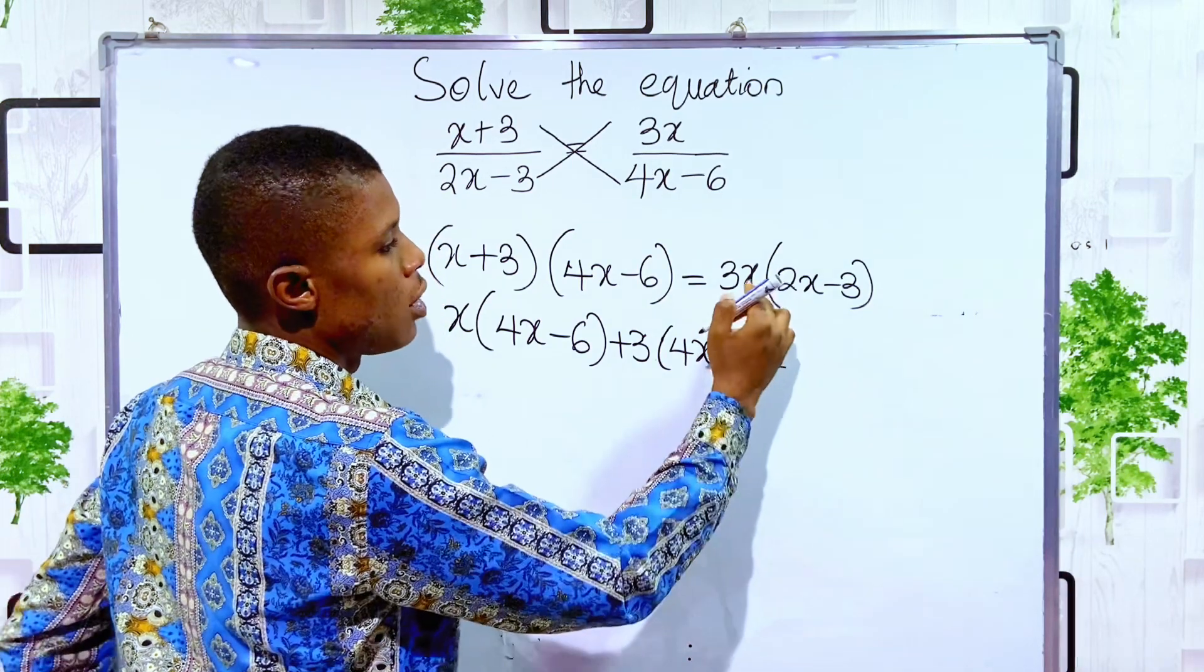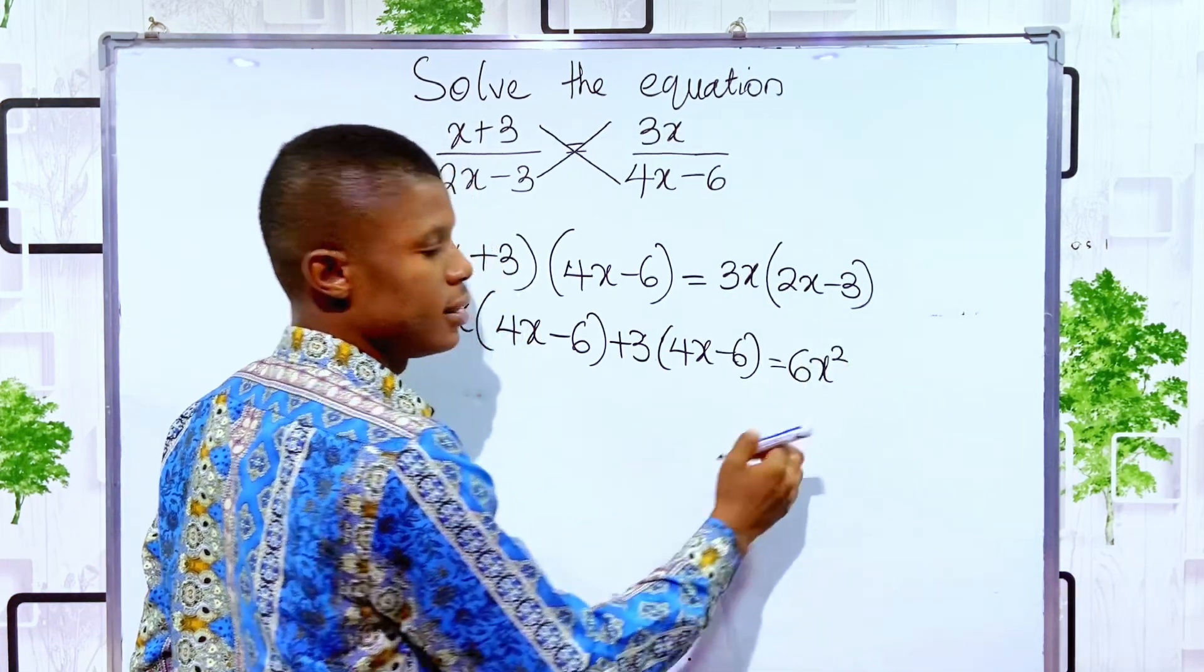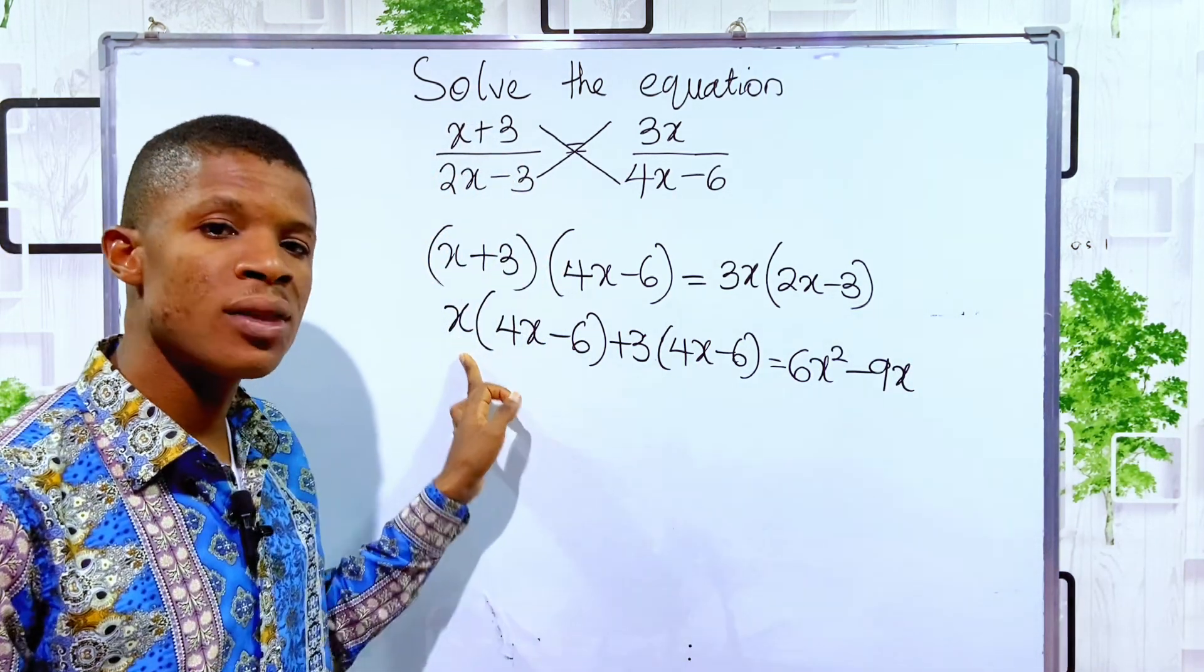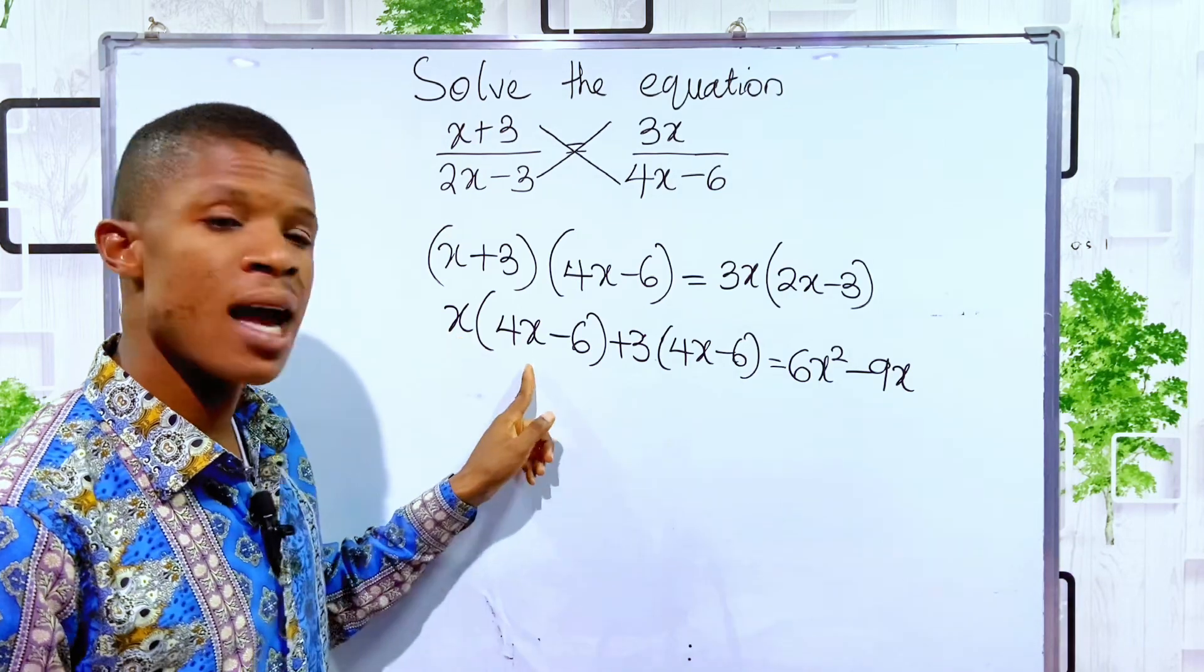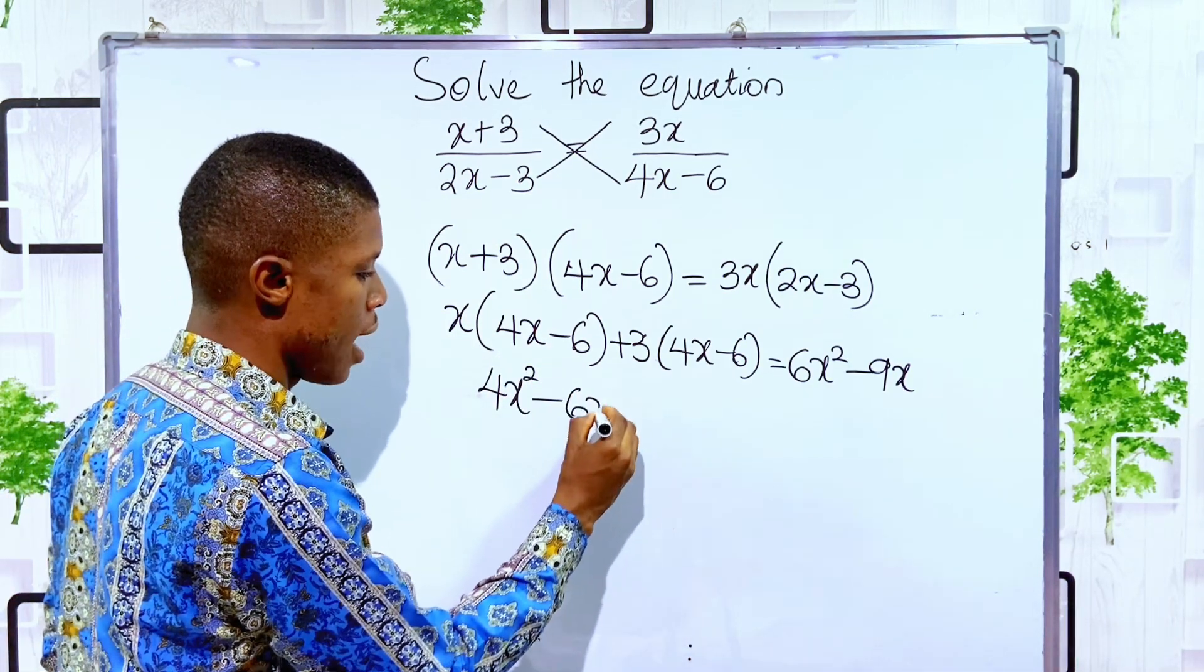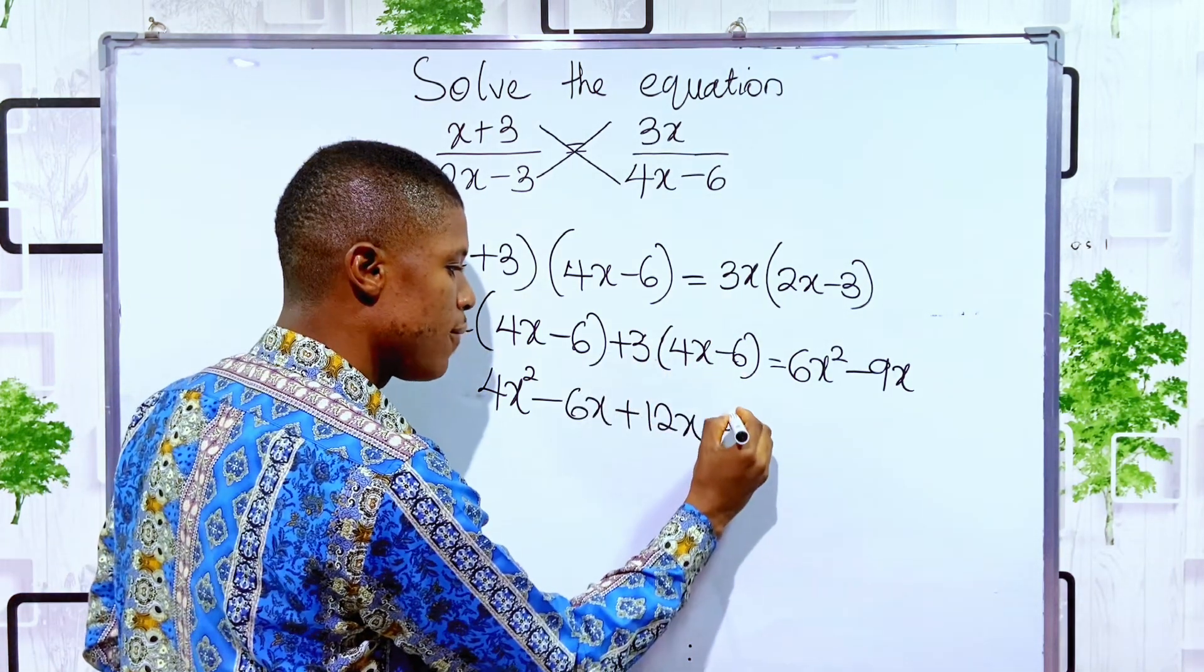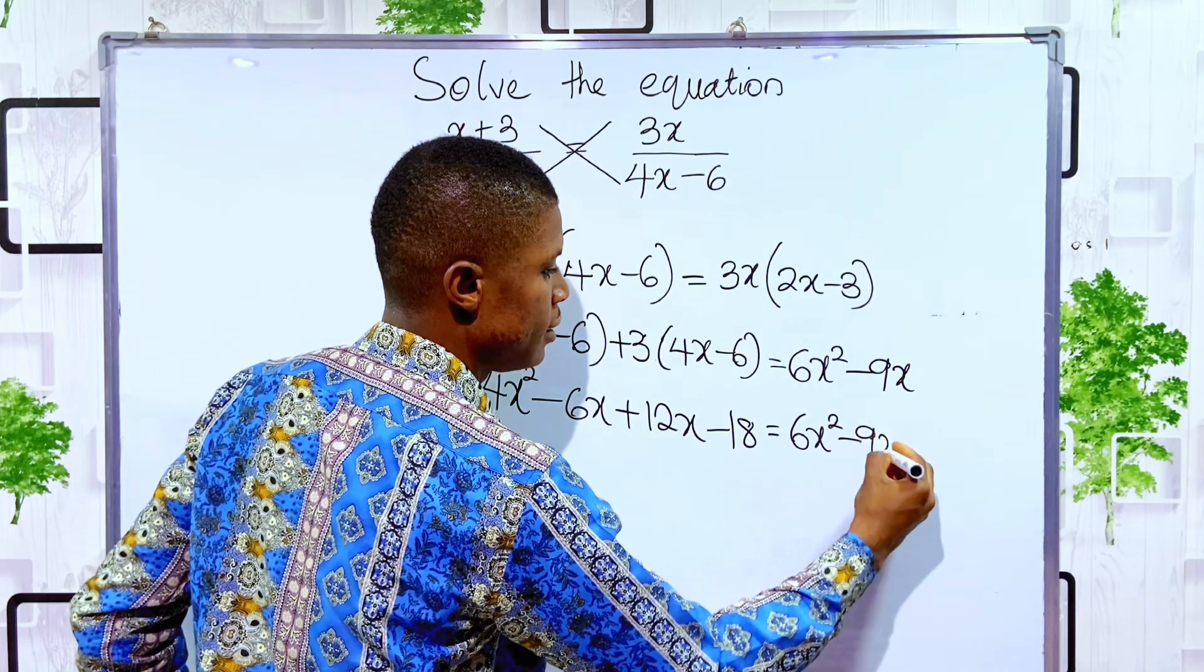And it is equal to, we have to multiply 3x to 2x, which will give us 6x squared. Then 3x will multiply minus 3, and that will give us minus 9x. So here, we have to open this bracket. We have to use x to multiply each term in the bracket. So x times 4x will give you 4x squared. x times minus 6 will give you minus 6x. Plus 3 times 4x will give you plus 12x. Plus 3 times minus 6 will give you minus 18. And it is equal to 6x squared minus 9x.